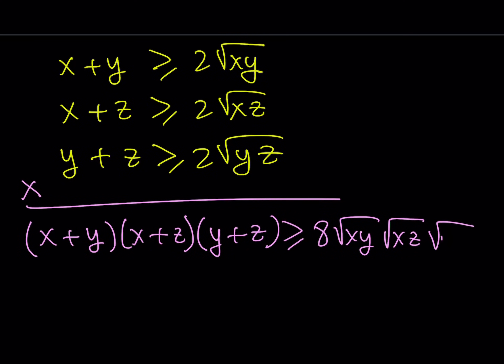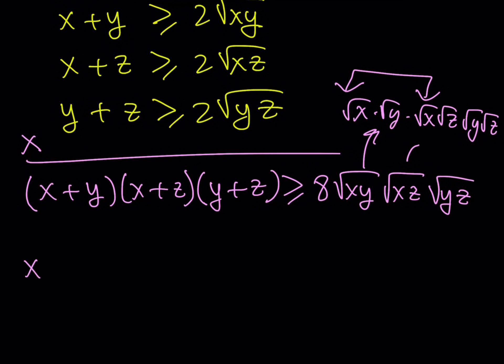Now, one way to do this is consider that square root of xy can be written as square root of x times square root of y. This is the square root of x times square root of z. And then we get the square root of y times the square root of z. Now, notice that when you multiply square root of x by itself, you're going to be getting x from here. So it's going to look like this.